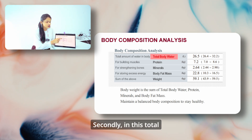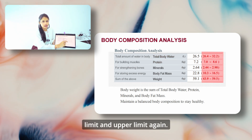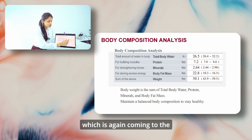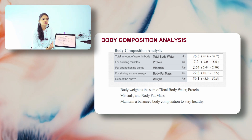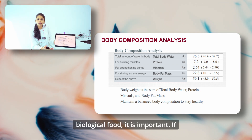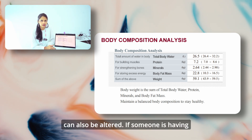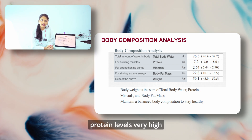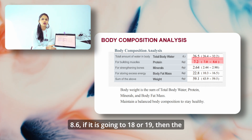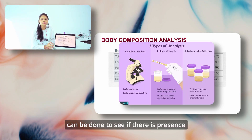Secondly, in this total body water, how much protein is present is mentioned here, with a lower limit and upper limit. This person has 7.2 kg of protein, which is again coming to the lower edge. In this case, muscle buildup is important, along with sufficient dietary protein intake. Supplements can also be altered accordingly. If someone has protein levels very high — for example, if the upper limit is 8.6 but it is going to 18 or 19 — then a urine analysis can be done to check for the presence of protein in the urine.